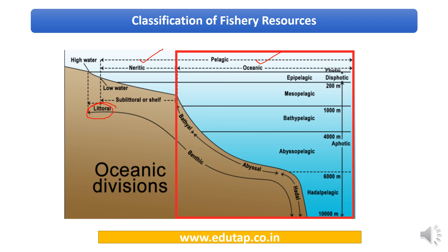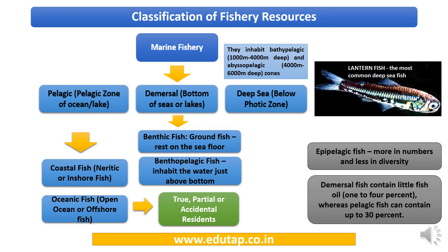Now we look at marine fishery resources, which fall under capture fisheries. Under marine fishery, there are three broad categories of fish: pelagic fish (residing in the pelagic zone), demersal fish (residing at the bottom of seas or lakes), and deep sea fish (found below the photic zone, in the aphotic zone).